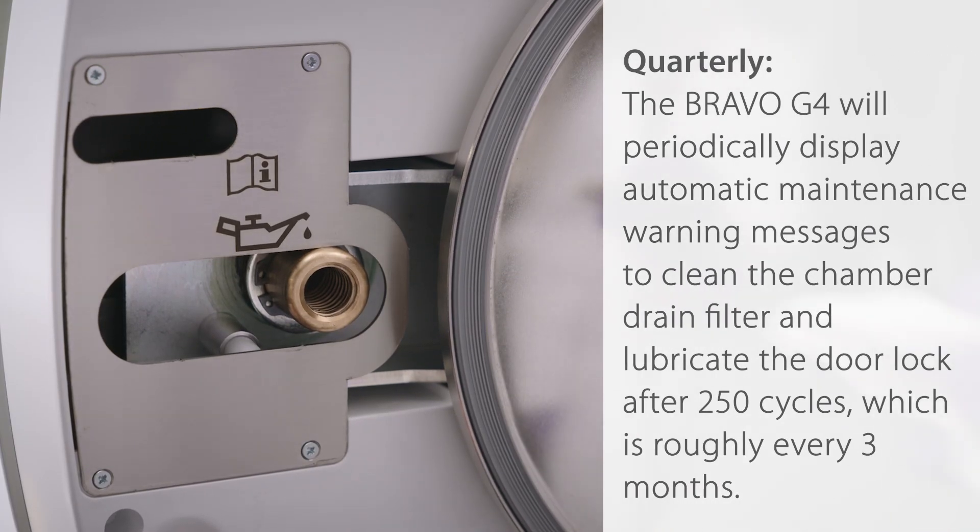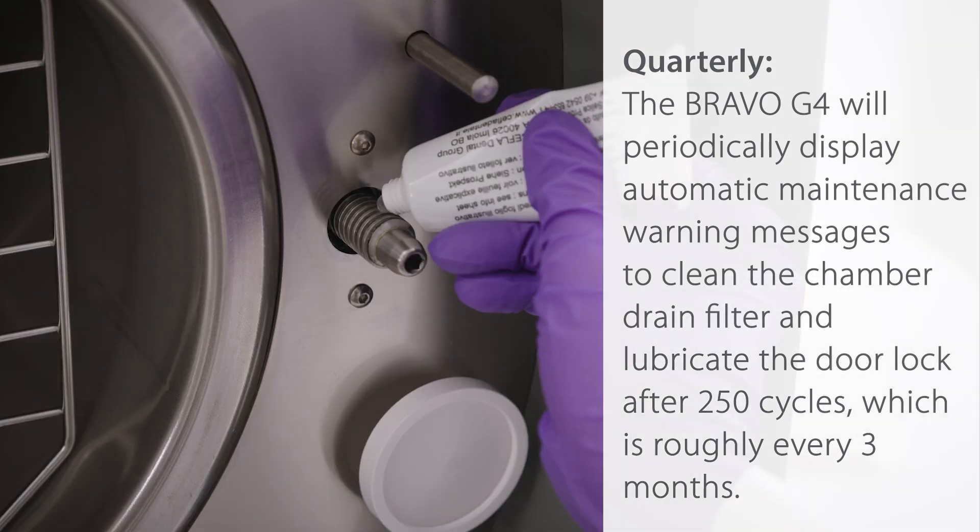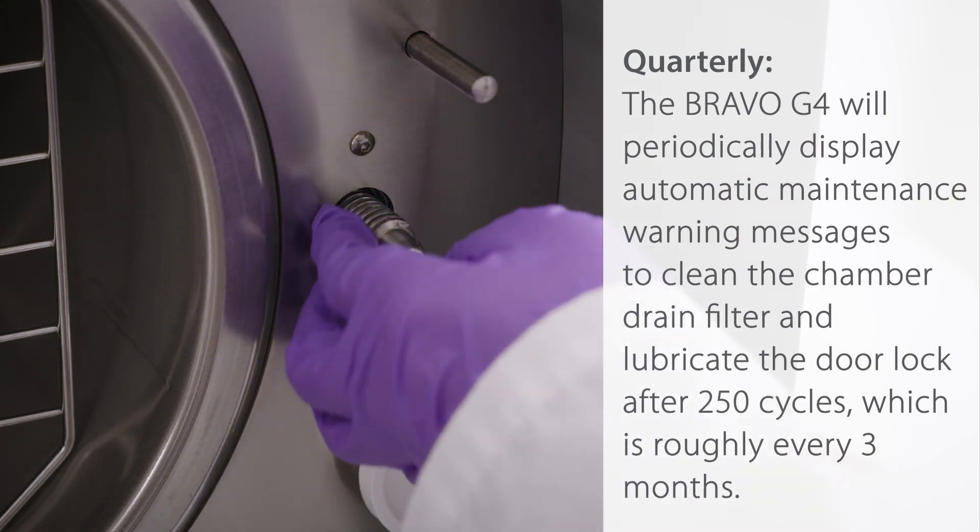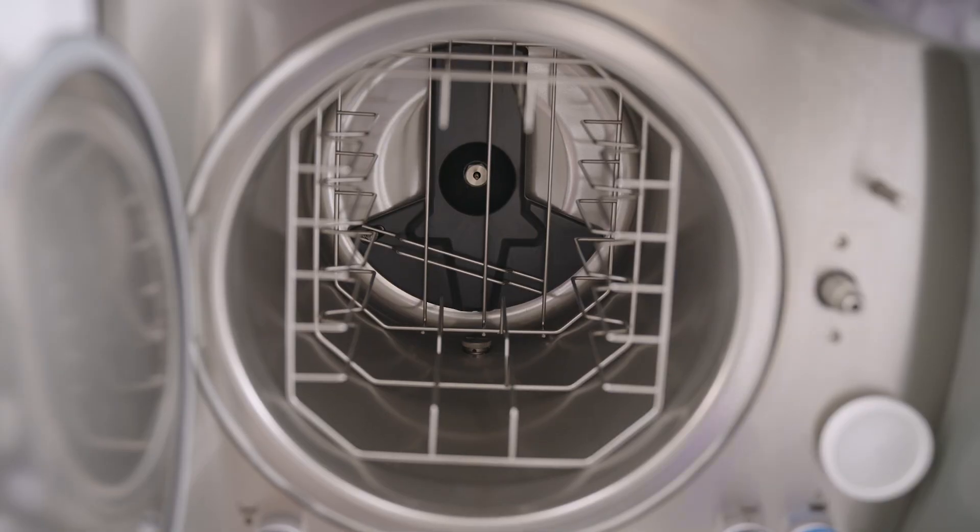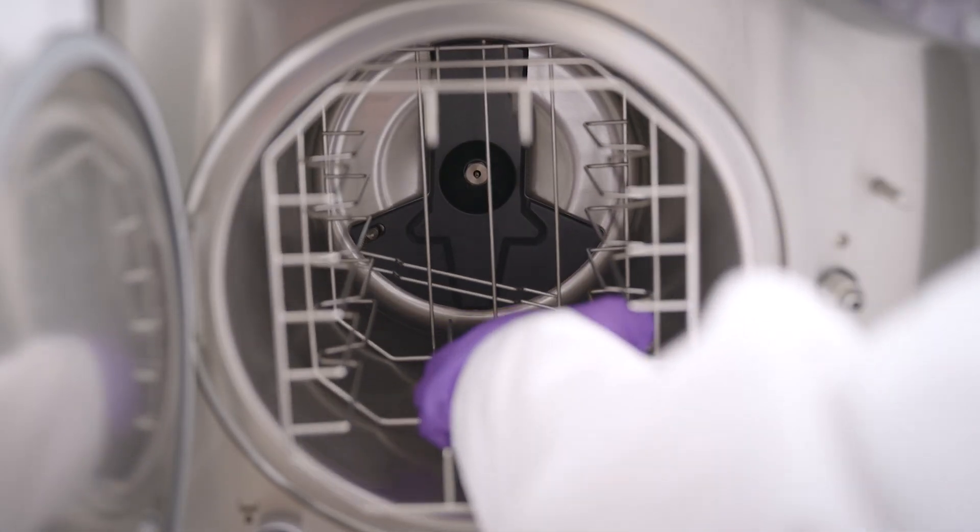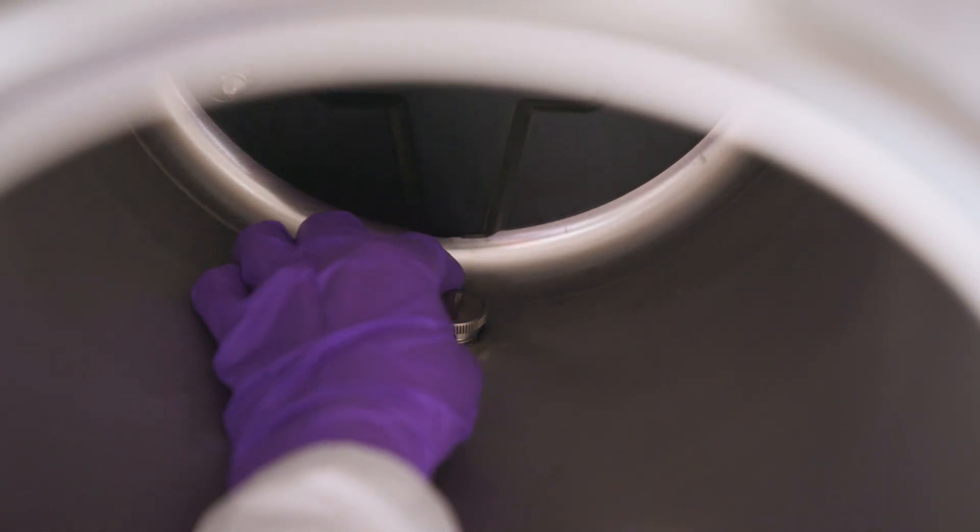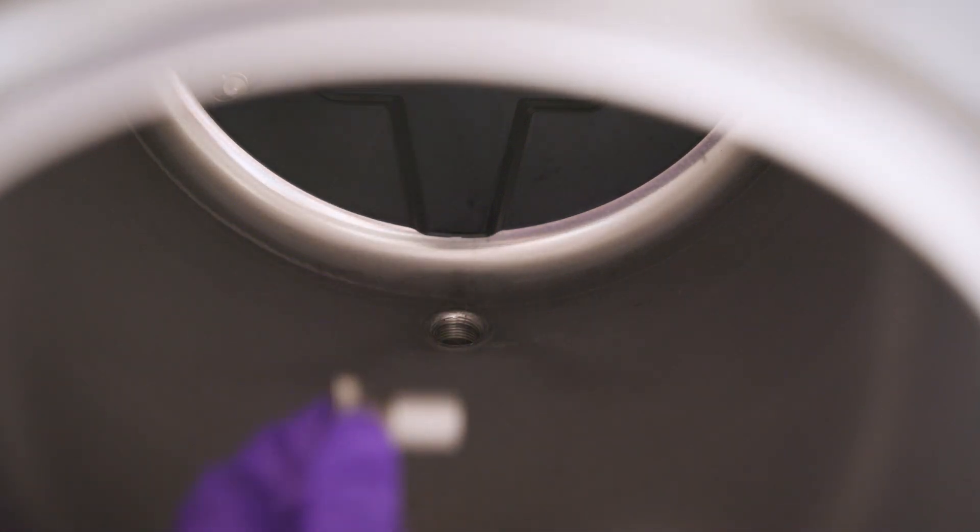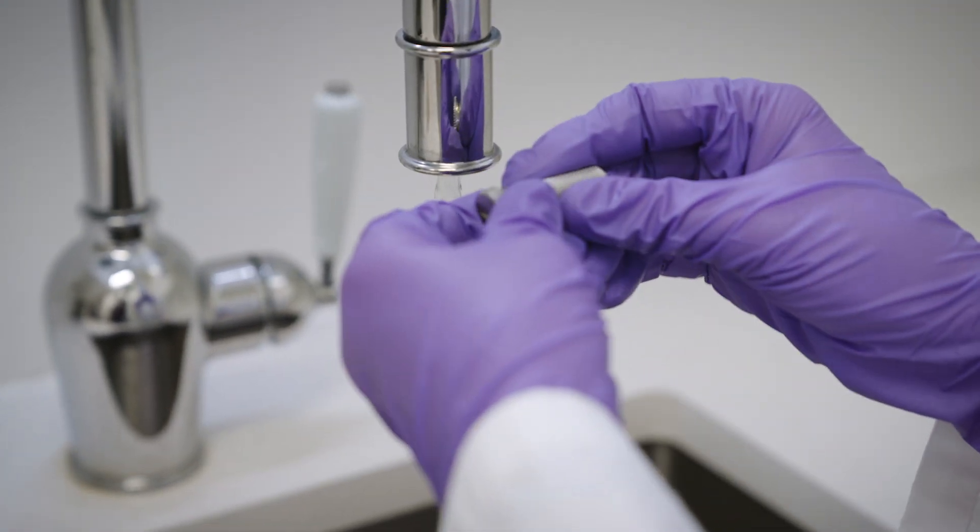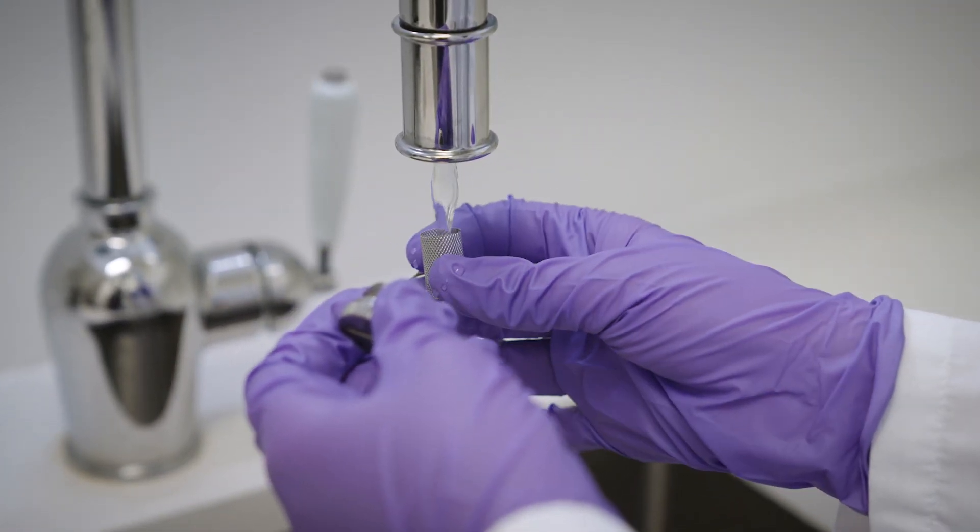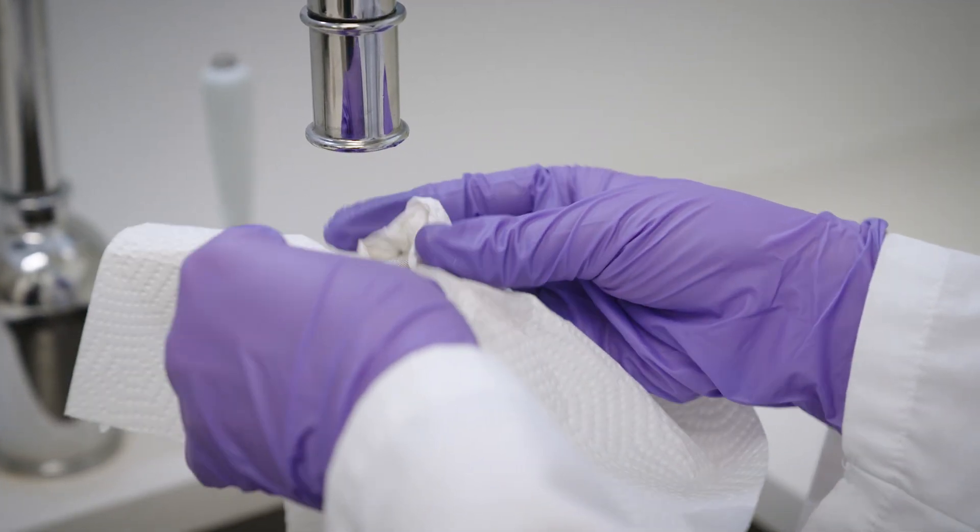Quarterly, the Bravo G4 will periodically display automatic maintenance warning messages to clean the chamber drain filter and lubricate the door lock after 250 cycles, which is roughly every three months. To clean the drain filter, open the sterilizer door and remove the cap using a coin or flat-bladed tool. Loosen the union that contains the filter. Remove the filter from its support and thoroughly clean it under a jet of running water and, if necessary, use a sharp tool to remove any large foreign bodies. If available, use a jet of compressed air to remove debris from the filter.